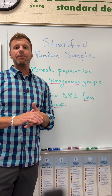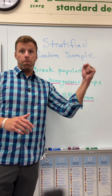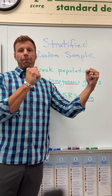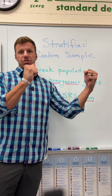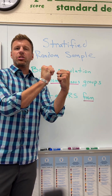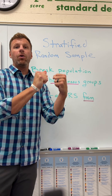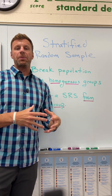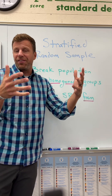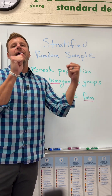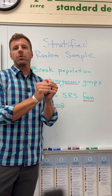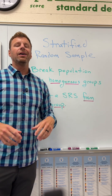The variation I'm speaking about is the variation between the true population parameter — the true average height of all the students — and the sample mean from just your sample. We want those two values to be as close as possible. When you have a really nice representative sample, you're going to get a reduction in variation, and the true population parameter and the sample statistic are going to be really, really close together. And that's what you want.